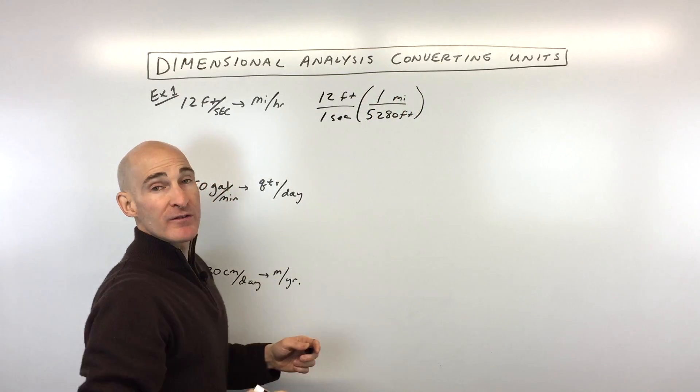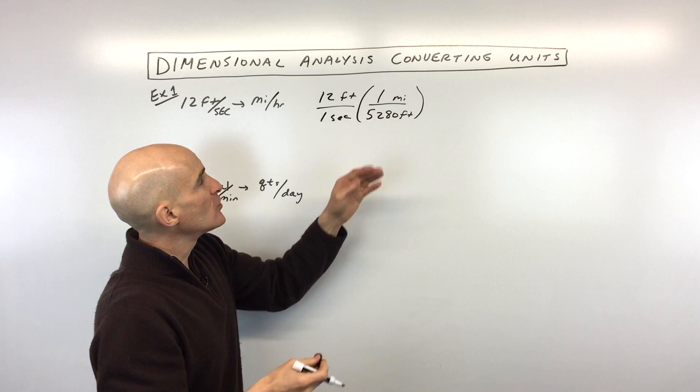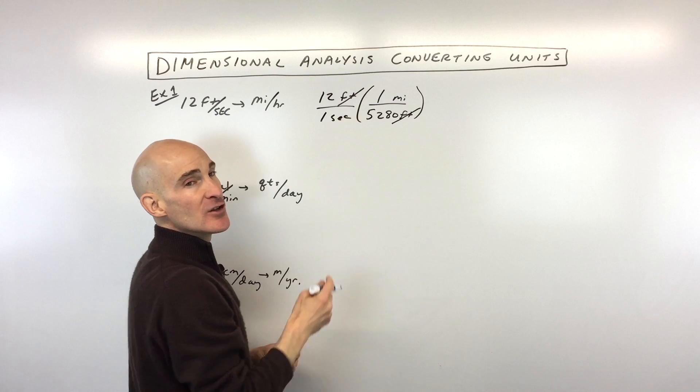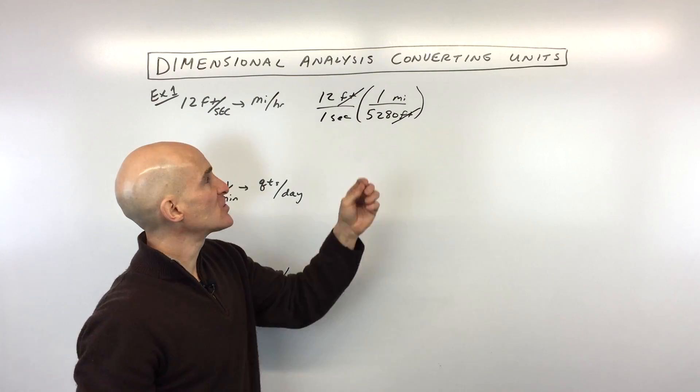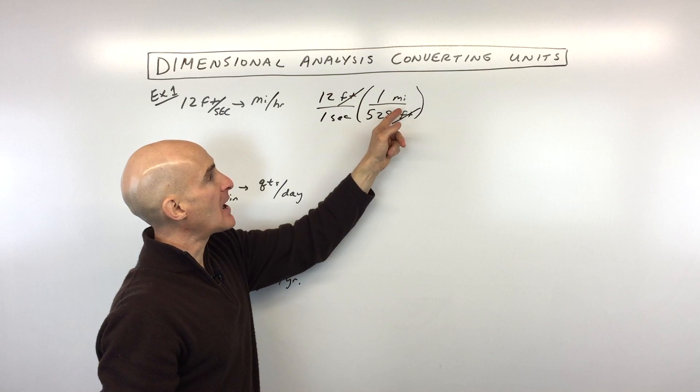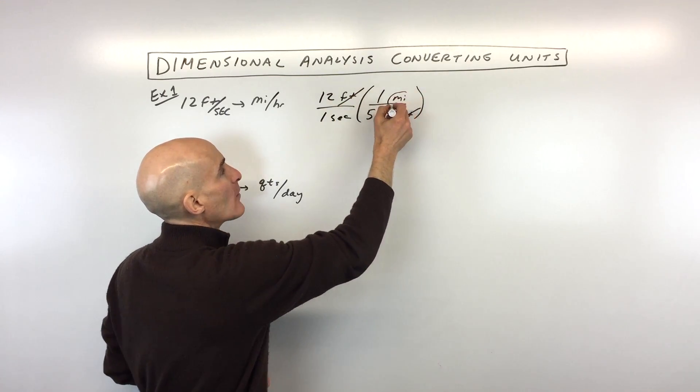Now, why did I write the miles in the numerator and the feet in the denominator? Well, you want to do it this way because you want the feet in the denominator to cancel with the feet in the numerator. Remember, when you're reducing fractions, you can reduce top and bottom, or on the diagonal when you're multiplying. This way, we end up with the units we want, which are miles.